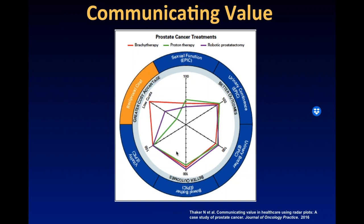Brachytherapy shows slightly worse urinary bother, while protons and surgery show less urinary bother. For bowel bother, robotic prostatectomy does best and protons worst. This radar plot can aid decision-making and potentially inform value-based reimbursement as we consider bundled payments. We've extended utilization and improved quality by incorporating MRI, which we've demonstrated reduces overall costs by cutting elements of workup and procedure in simulation, treatment planning, and post-implant assessment.